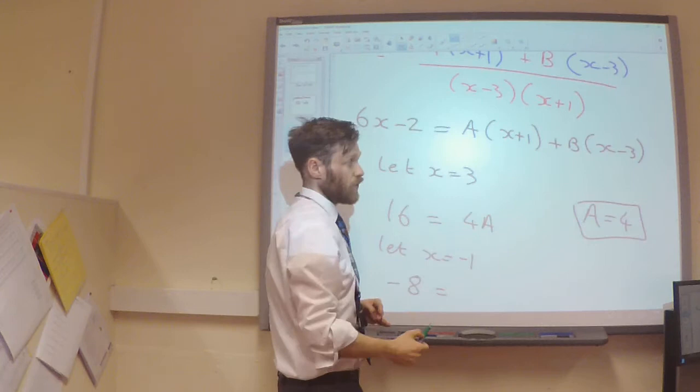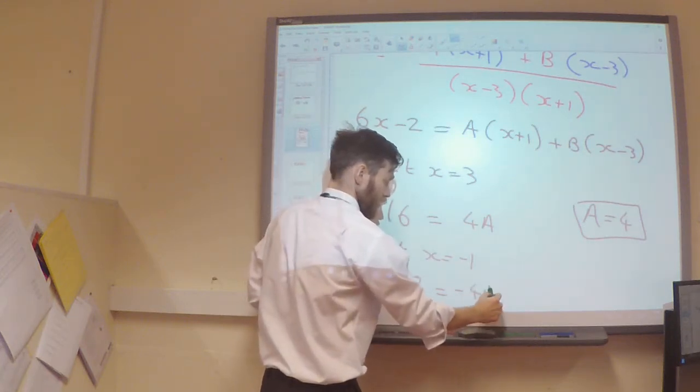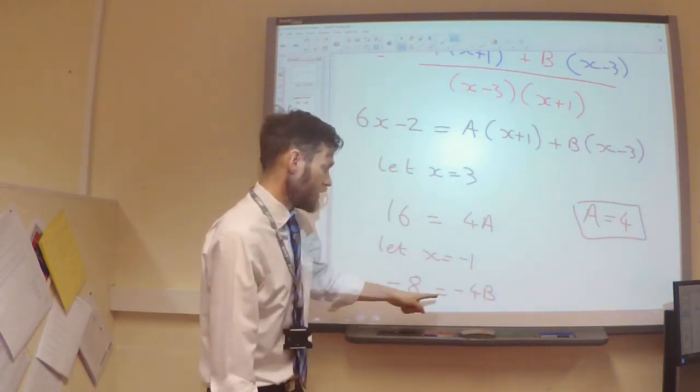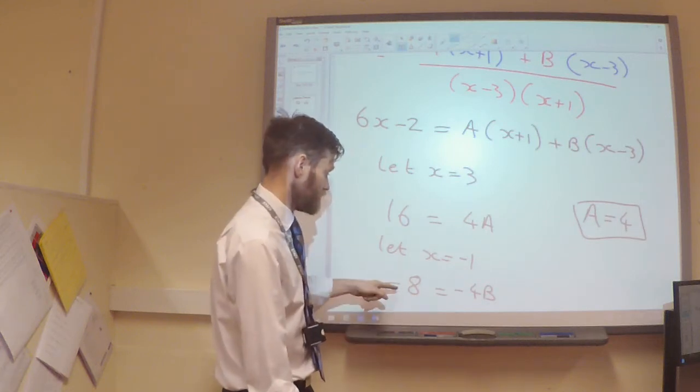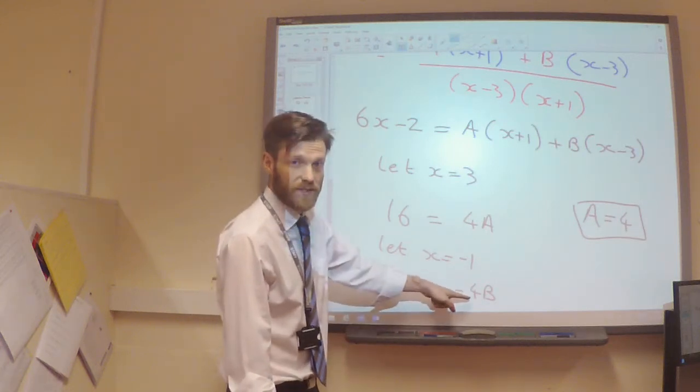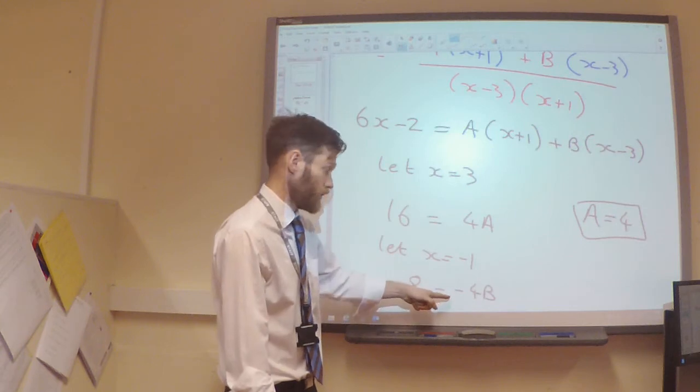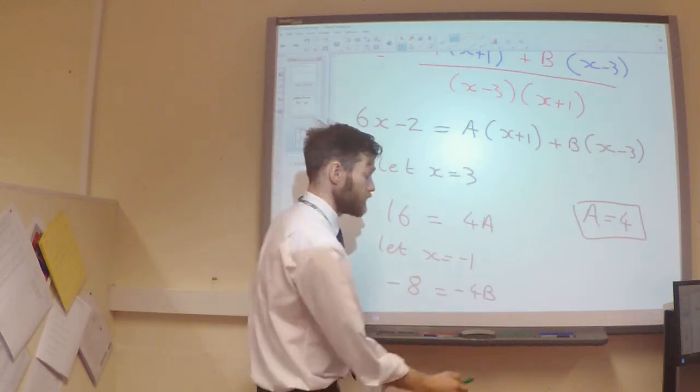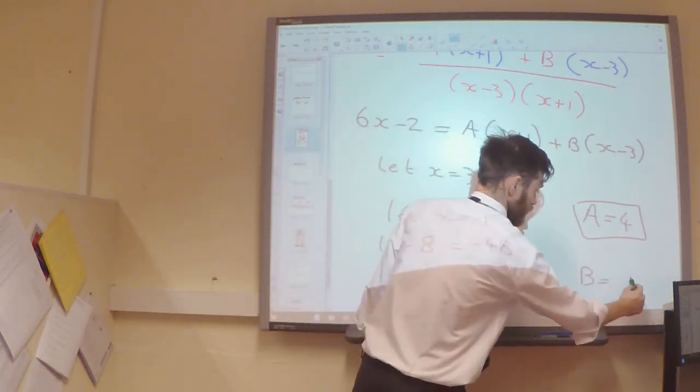And over here, I'm going to have B multiplied by minus 1, take away 3, which is going to be minus 4. So, I'm going to have minus 4B. Looking at this now, I can see minus 8 divided by the minus 4 is going to give me 2. So, I can see that my B is 2.